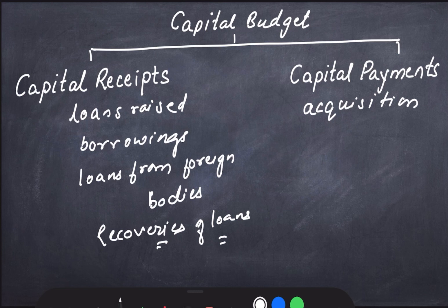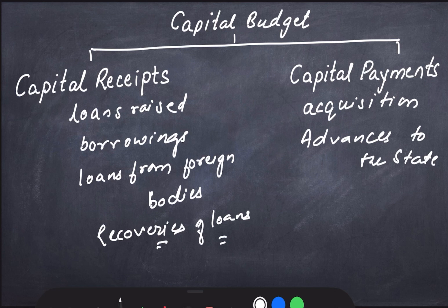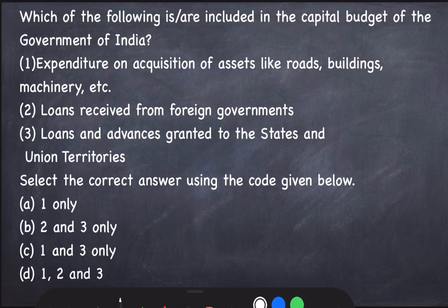Capital payments include capital expenditure on acquisition of assets like land, buildings — everything that builds an asset. The expenditure on that is called capital payment or capital expenditure. Advances granted by the central government to the state or union territories, investment in shares, loans, infrastructure etc. — these all are included in capital payment. So the answer will be all of the above: one, two, and three.